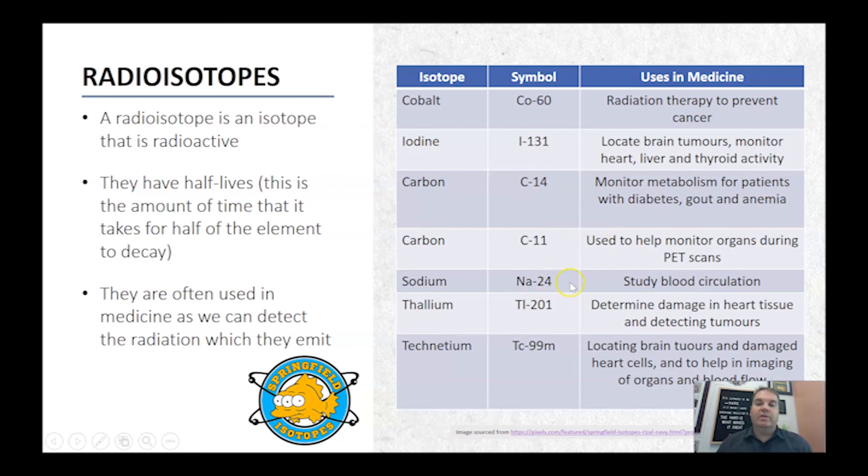Here's some other ones as well. The sodium-24, which is used to study blood circulation, thallium, technetium. So there's lots of different radioisotopes, which are used in medicine for various different reasons. But they all have the same thing in common in that they have a different number of neutrons than they would normally. They are radioactive, and because they give off radiation, we can detect that and use them in medicine.